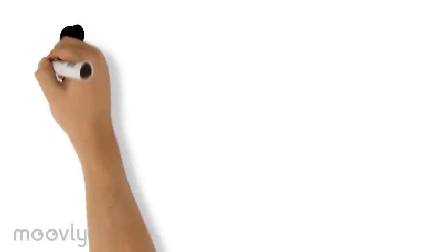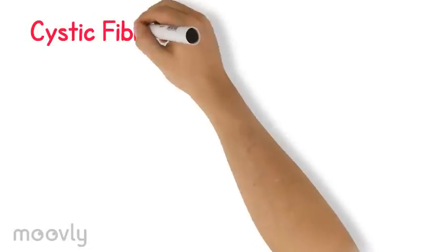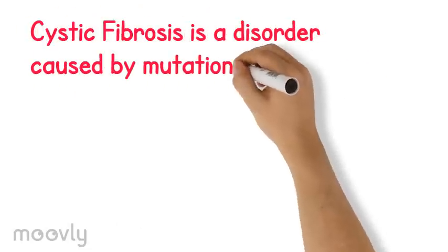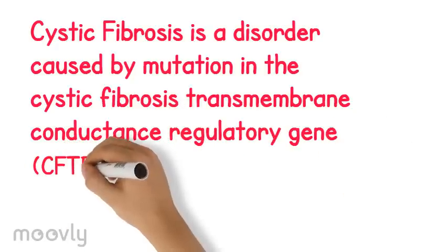Now that we know the fundamental genetic makeup of our body, let's move to the next big question. What is cystic fibrosis? Cystic fibrosis is a disorder caused by mutation in the cystic fibrosis transmembrane conductance regulatory gene, known as CFTR for short.